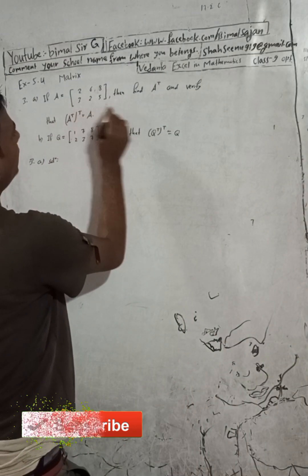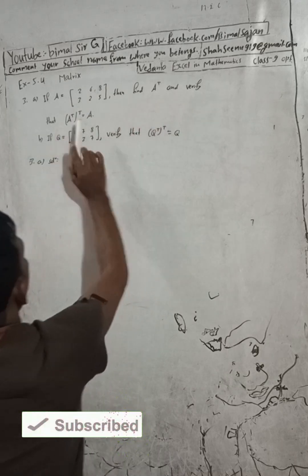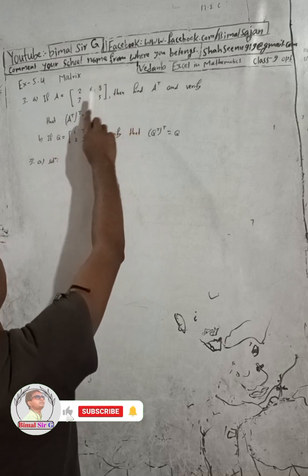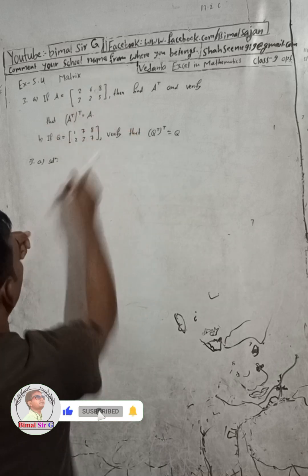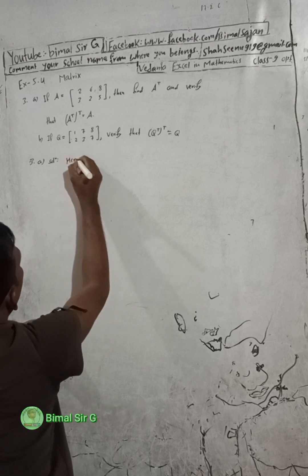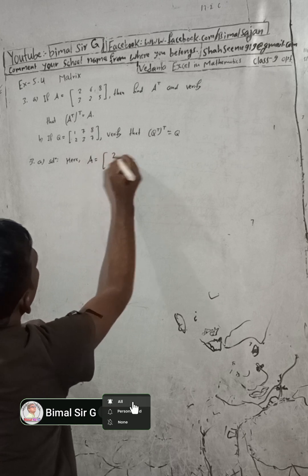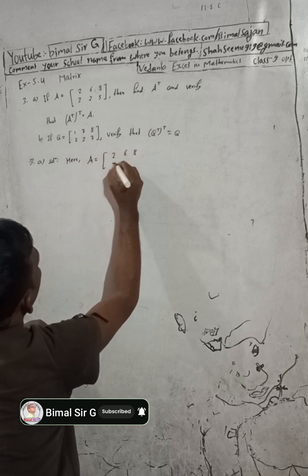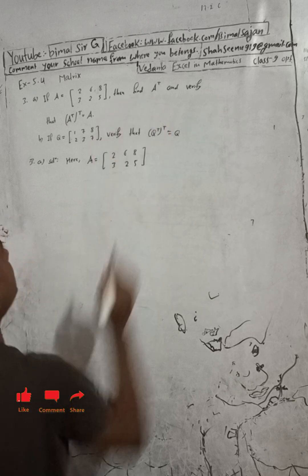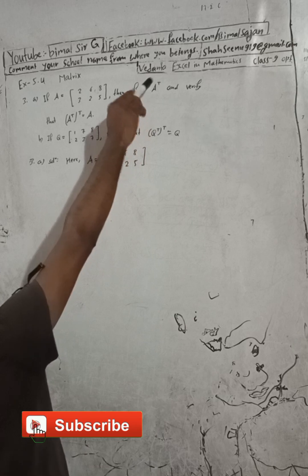...two six eight, three two five. Find A transpose and verify that the transpose of A transpose is equal to A. So given here: A is equal to two six eight, three two five. We have to find A transpose. How can we find A transpose?